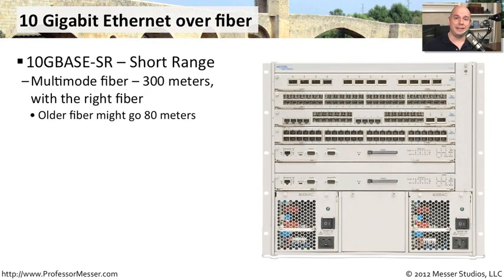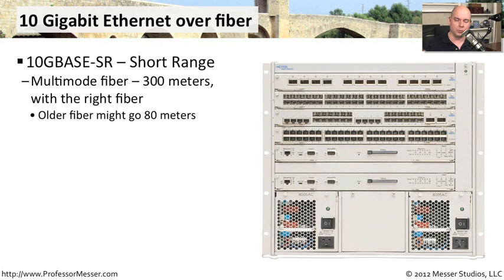There are three different standards generally seen with 10GB Ethernet over fiber. The first is 10GBaseSR — 10GB baseband using short-range communication. With older fiber, that goes about 80 meters, but with the right kind of fiber you can extend it to 300 meters, generally used inside a single room or data center.